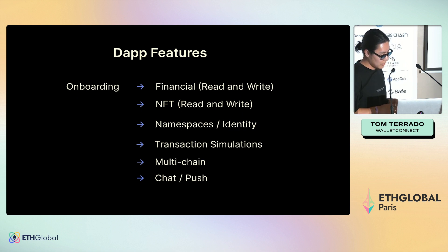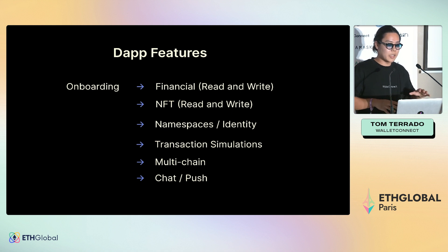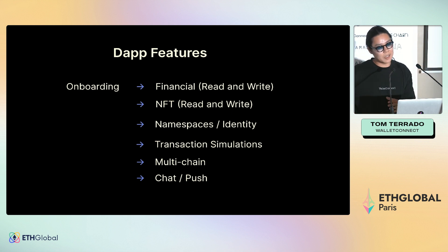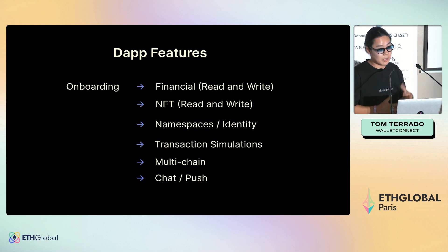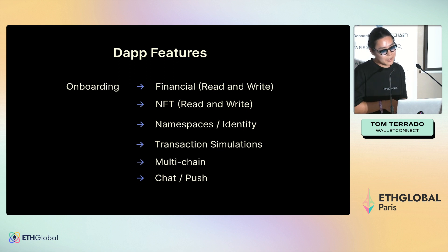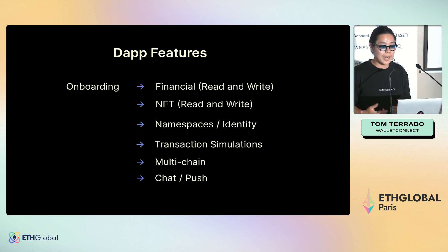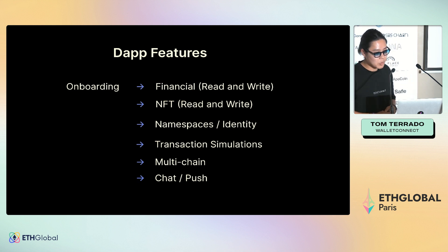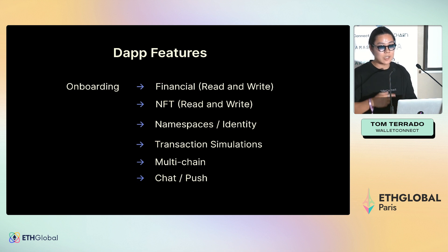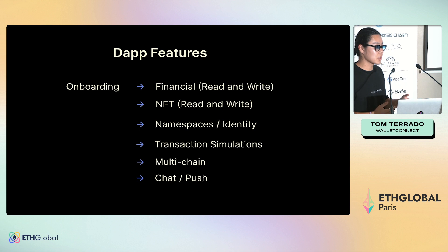The wallet and dApp paradigm really comes down to onboarding. The left side is wallets — account abstraction, MPC, WebAuthn — and the right side is dApps. We need to fix wallet onboarding, but we also need to think about dApp features: how do you financially read and write through staking, innovate on NFTs, or handle onboarding via token bound accounts, namespaces, ENS, Lens, DIDs, Disco, and ZK identity through tools like Sismo.